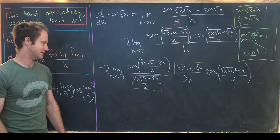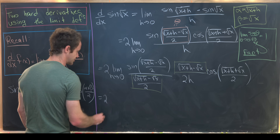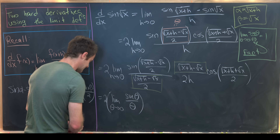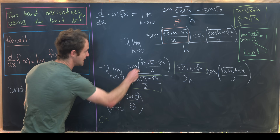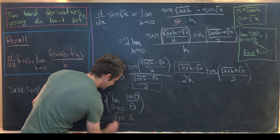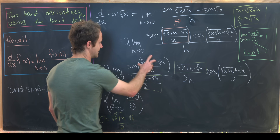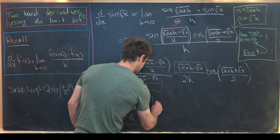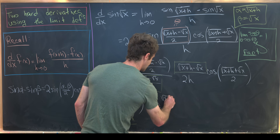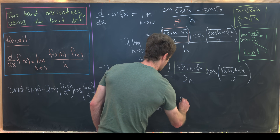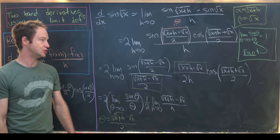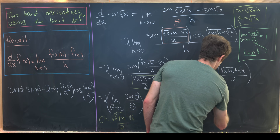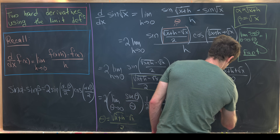We can split this into a product of three limits, since all of them exist. First, the limit as θ goes to zero of sin(θ)/θ, where θ = (√(x+h) - √x)/2. Second, one-half times the limit as h goes to zero of (√(x+h) - √x)/h. Third, the limit as h goes to zero of cos((√(x+h) + √x)/2).